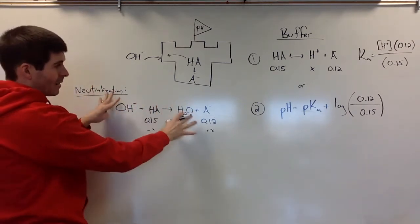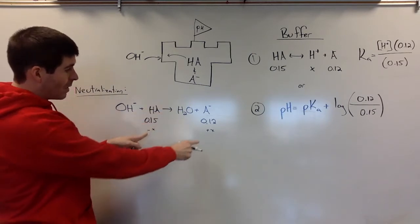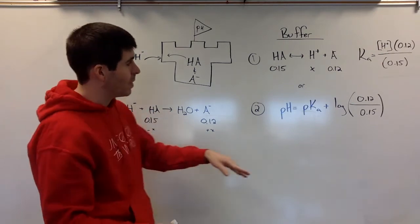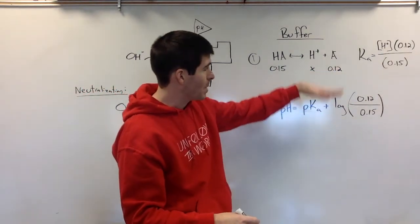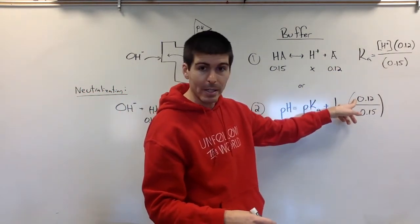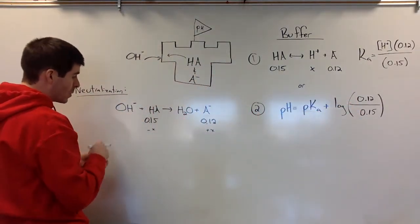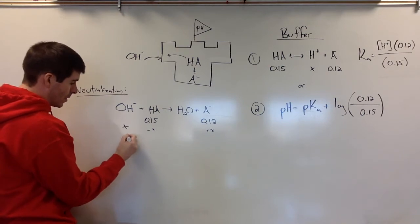Once this battle is over, then we still have a buffer. If we still have a buffer and we survived the battle, we can come over and calculate the pH again. We would have new molarities in our Henderson-Hasselbalch equation if this was able to be neutralized and go down to 0.